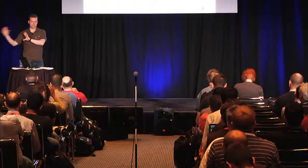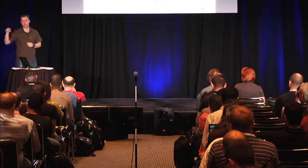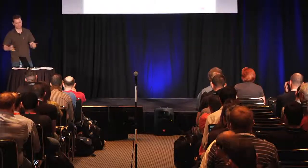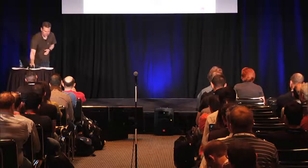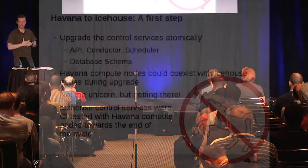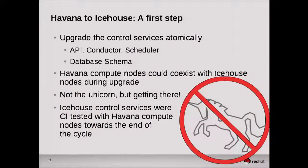This is a major improvement because you've got all these compute nodes that can mostly stay the same. You can upgrade your database, your control services, get them all up to Ice House level, and then start picking off your compute nodes as convenient — upgrading those to Ice House until everything is done. This is not the unicorn, but it's getting there. It's a step that massively reduces the size of the problem.